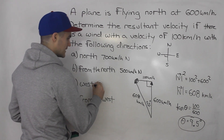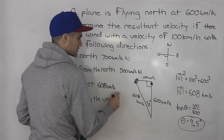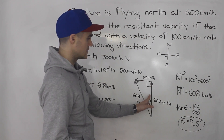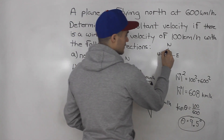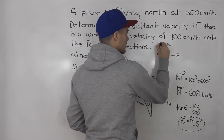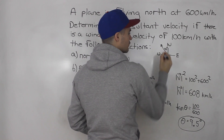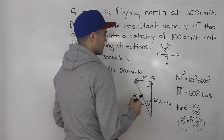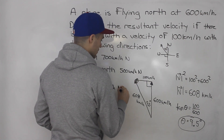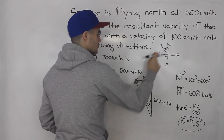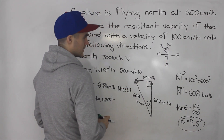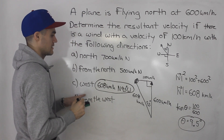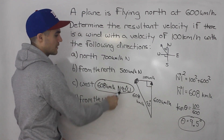So the answer to part C is 608 kilometers per hour. For the direction, this 9.5 degrees is to the left of north on the compass — the plane is going north but 9.5 degrees to the west. So we state it as north 9.5 degrees west. That is the velocity of the plane for part C — we have both the speed and the direction.